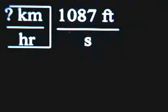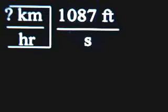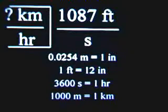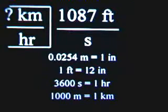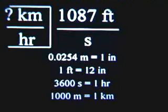The second multi-step dimensional analysis problem is to change 1,087 feet per second into kilometers per hour. We've got to take care of the top and the bottom part of the fraction — we need to change feet into kilometers, and seconds into hours. To help us make these conversions, the equalities we'll use are: 12 inches in a foot; every inch is equivalent to 0.0254 meters; 1,000 meters in one kilometer; and 3,600 seconds per hour.